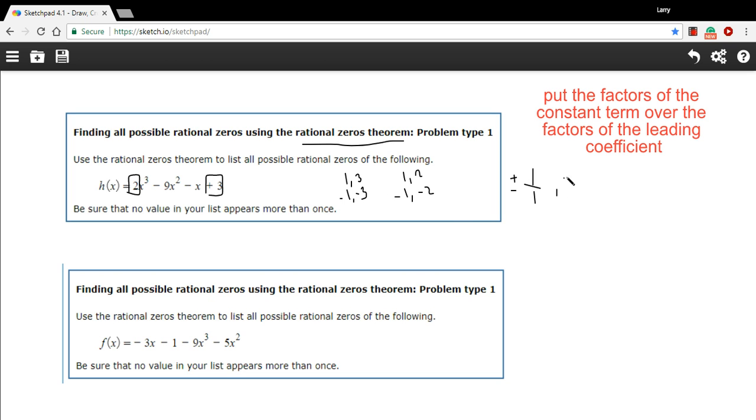Again, we could have 1 over -2, so this is going to be positive or negative. And then we could have 3/1, and again, positive or negative. And we could have 3/2, and again, positive or negative.